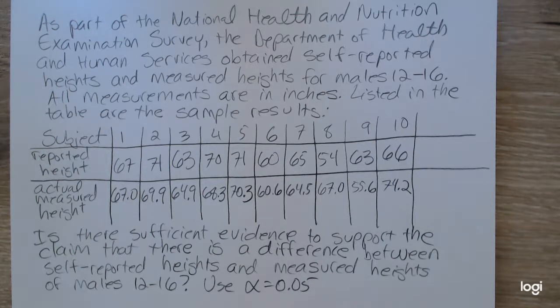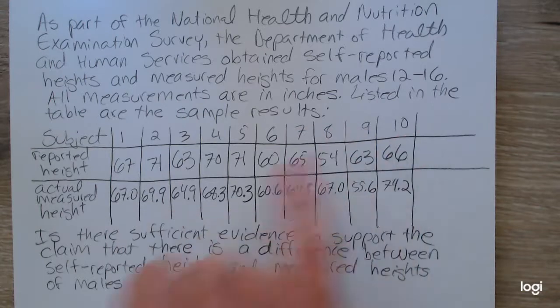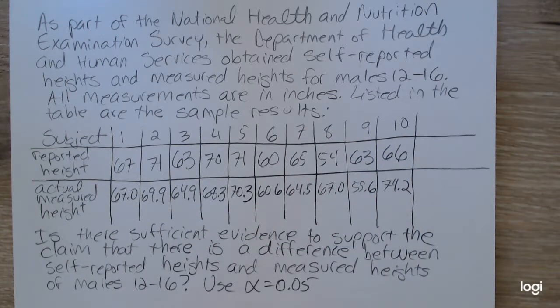Listed in the table are the sample results. For example, for each of the 10 subjects we have two measurements: the height that they say they are and then the actual measured height.